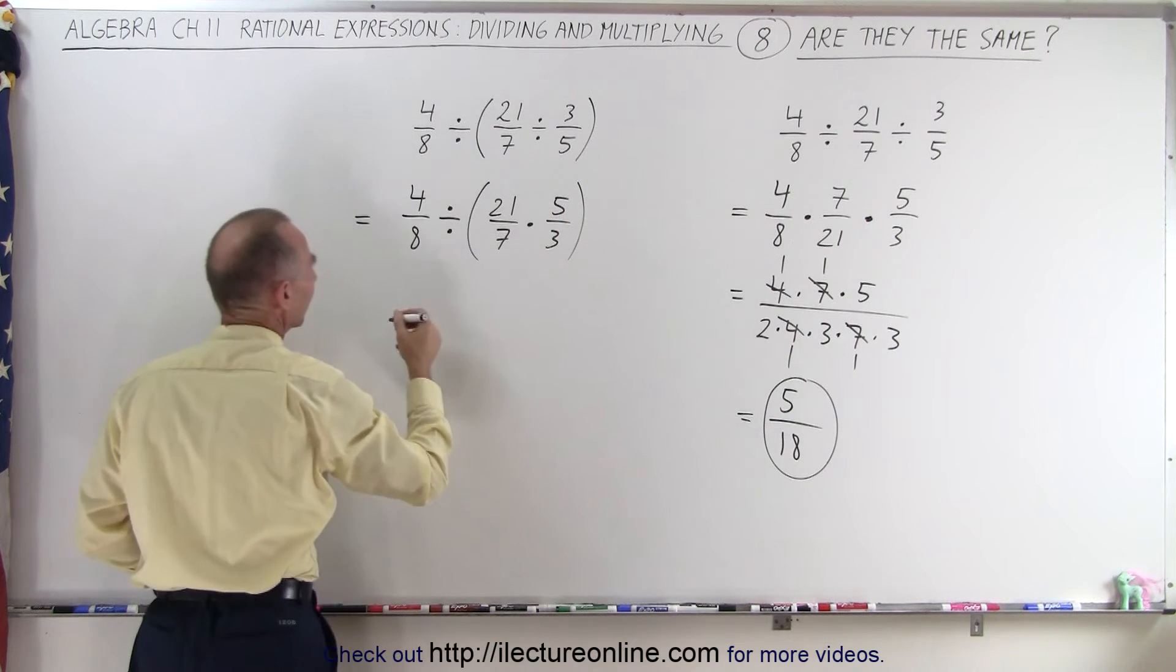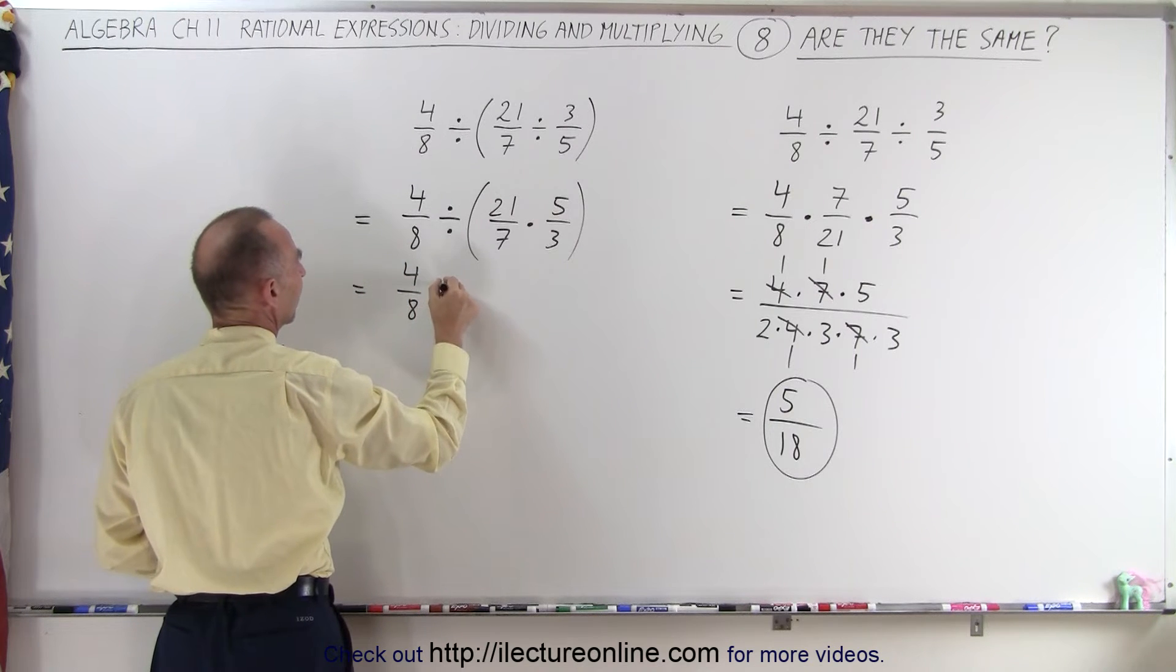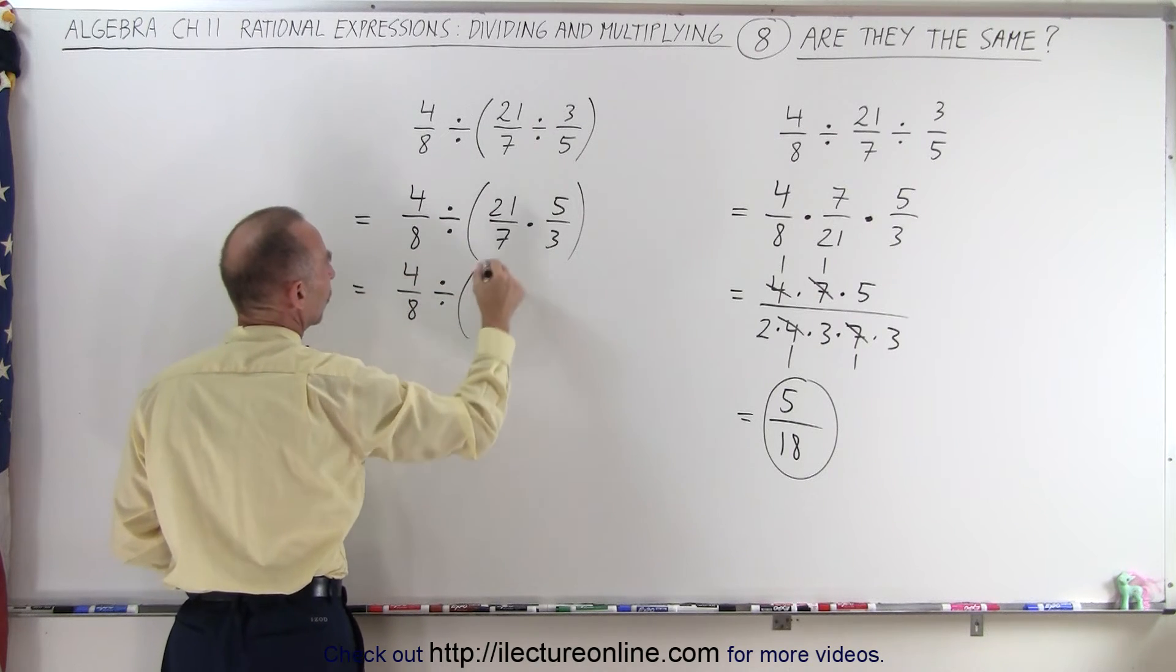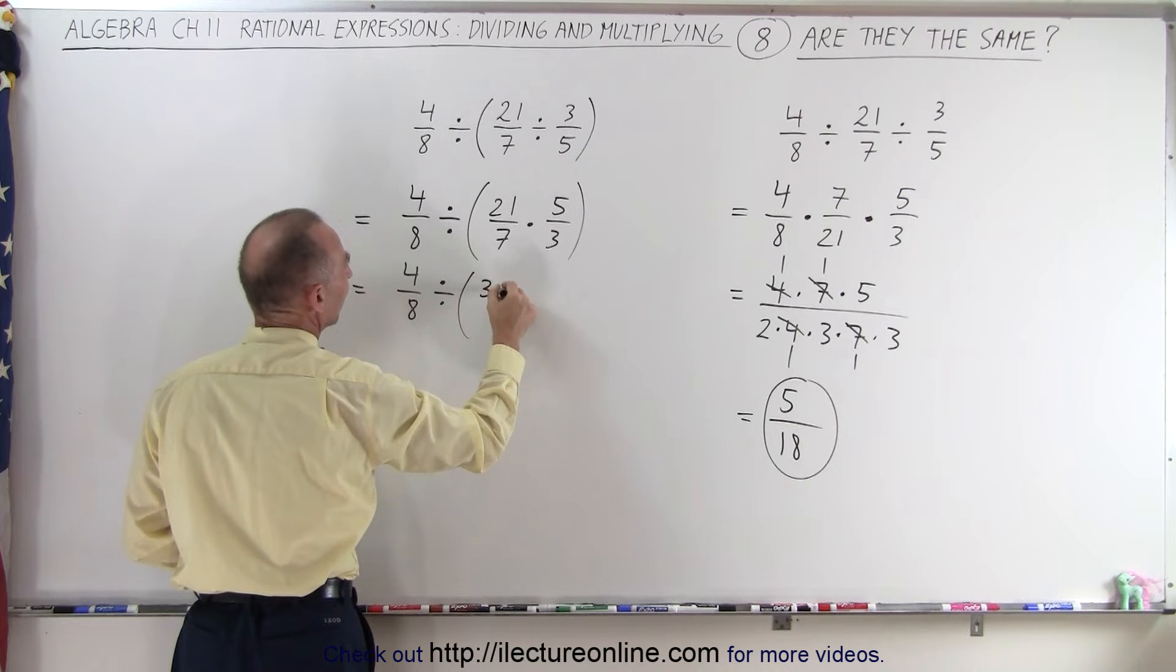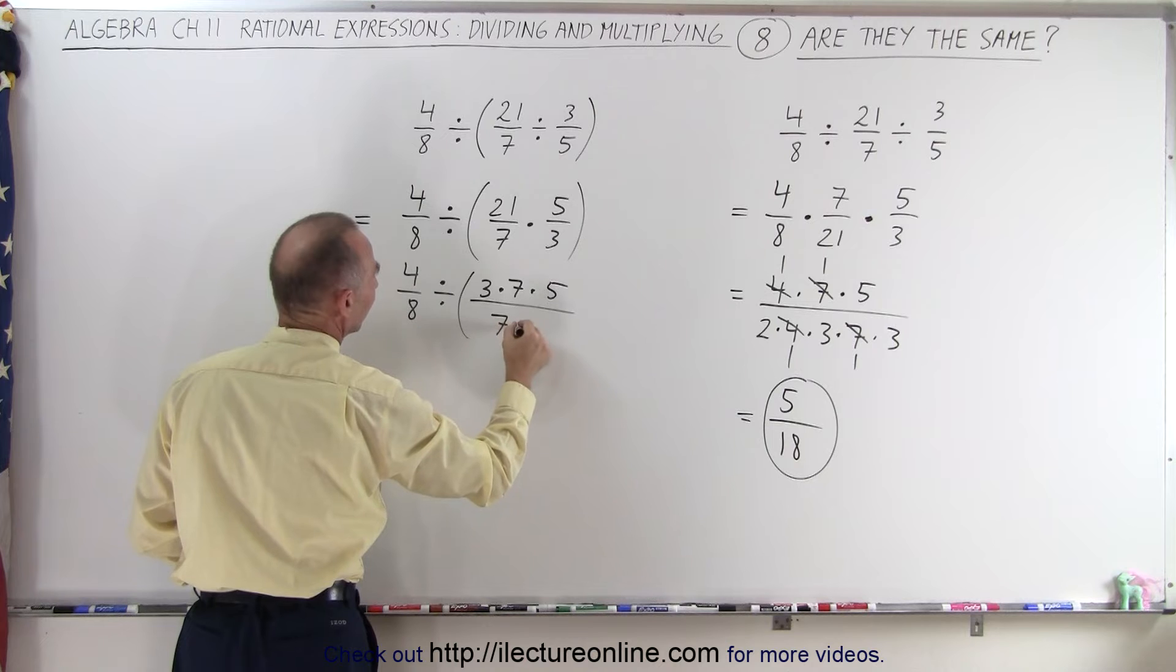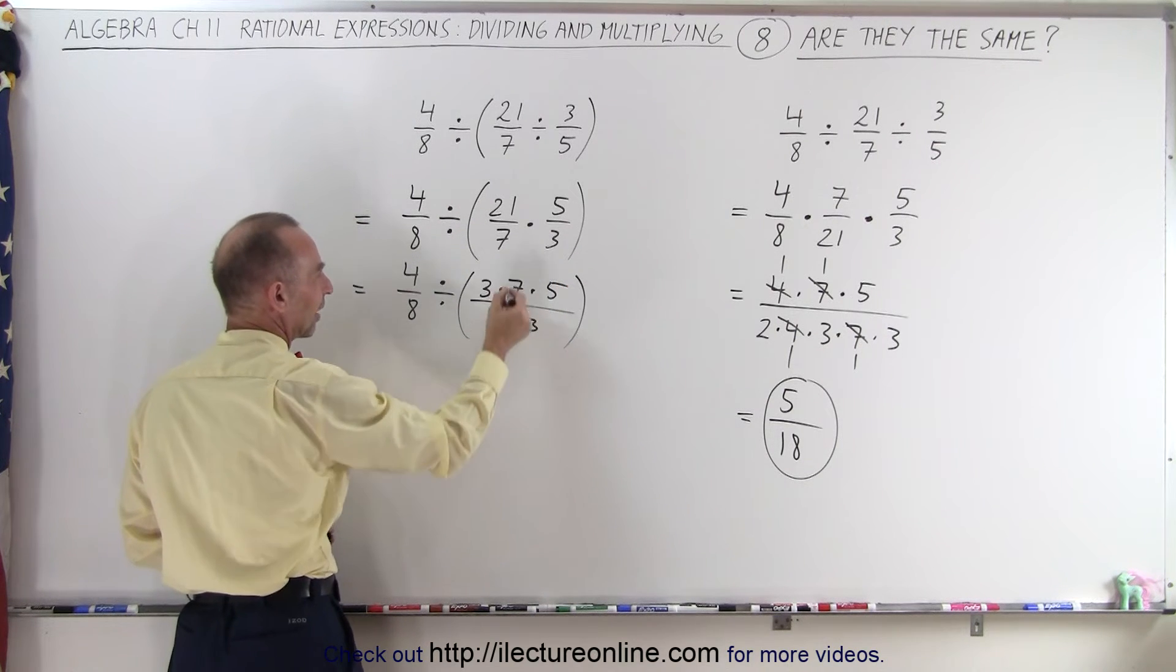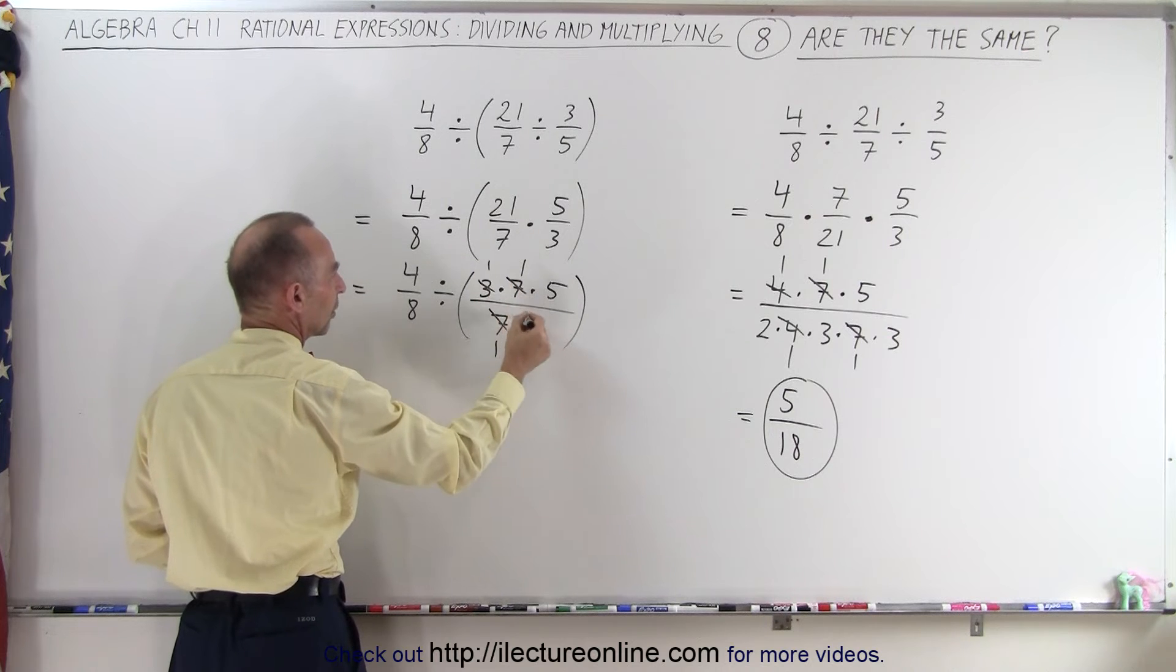And then we can simplify this by writing this as 4 over 8, divided by, 21 can be written as 3 times 7, times 5, divided by 7 times 3. And so that can be simplified, the 7's cancel out, and so do the 3's.